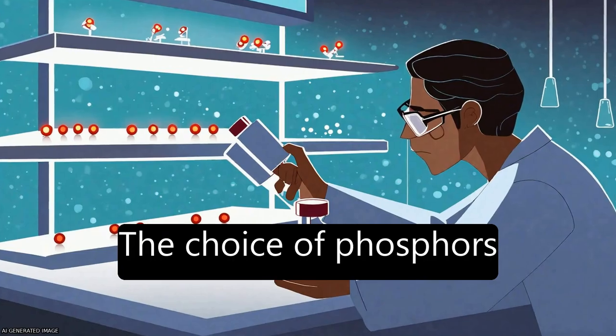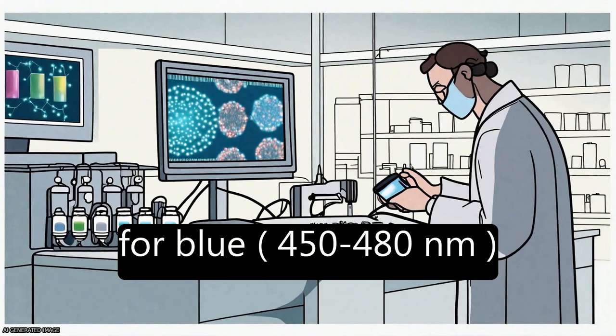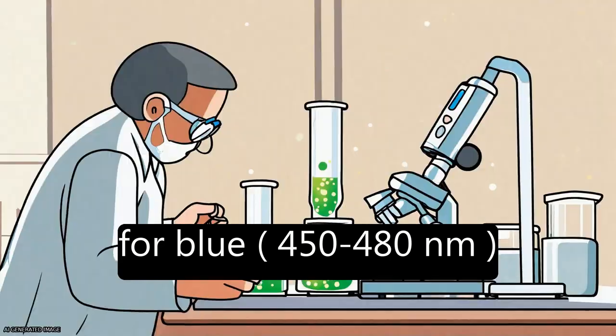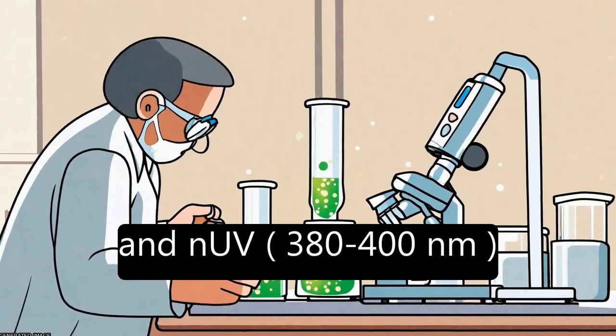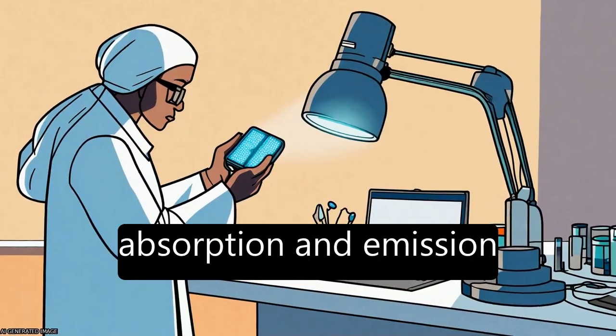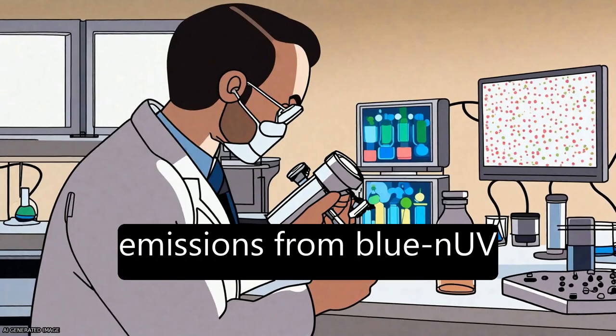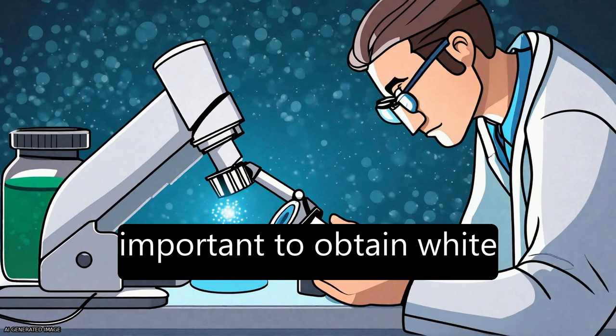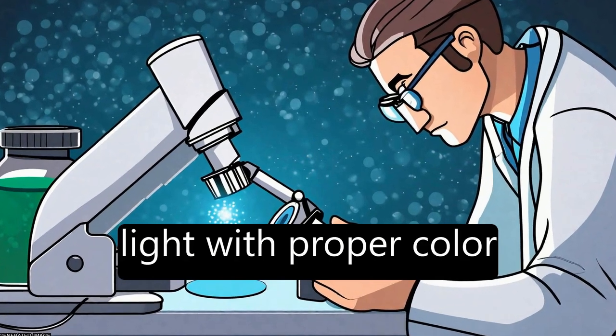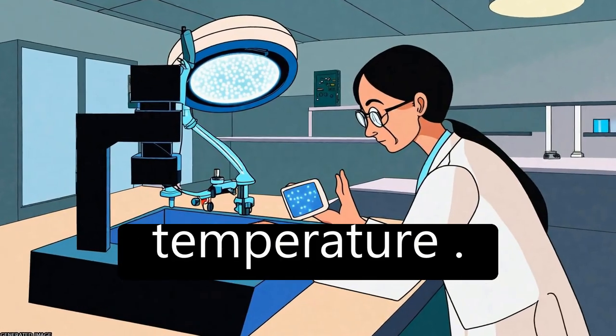The choice of phosphors for blue, 450 to 480 nm, and NUV, 380 to 400 nm, LEDs depends on their absorption and emission properties, and a balance between the emissions from blue NUV LEDs and phosphors is important to obtain white light with proper color rendering index and color temperature.